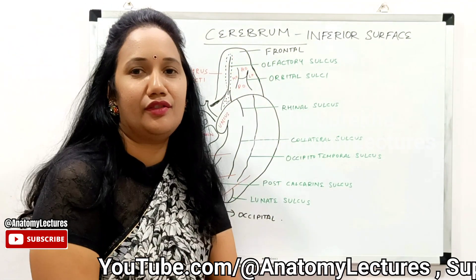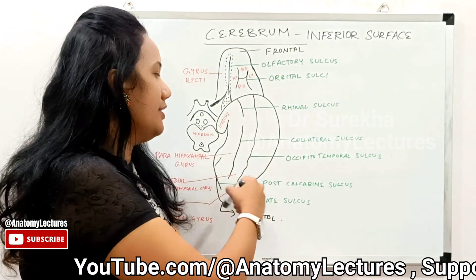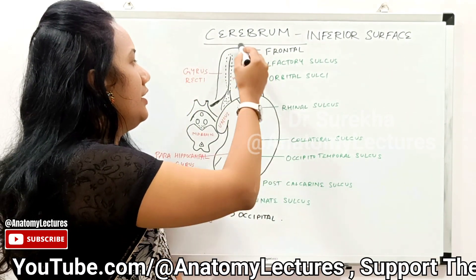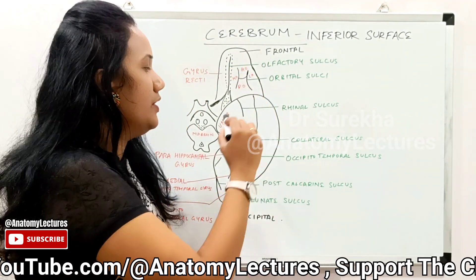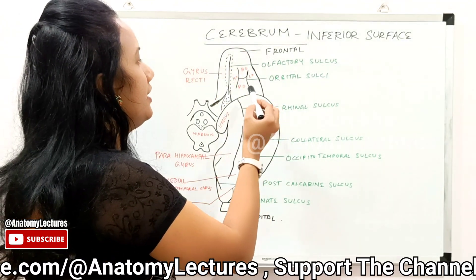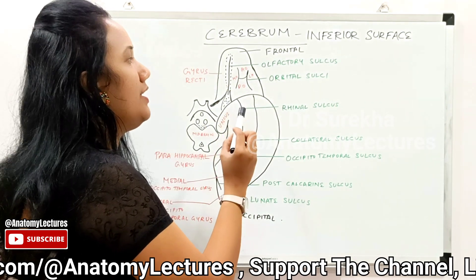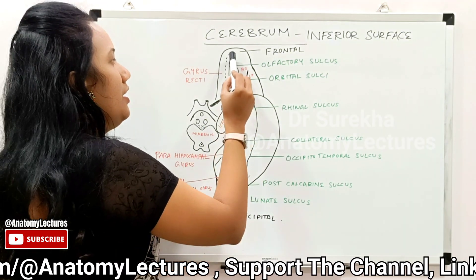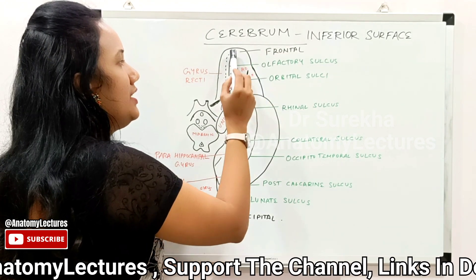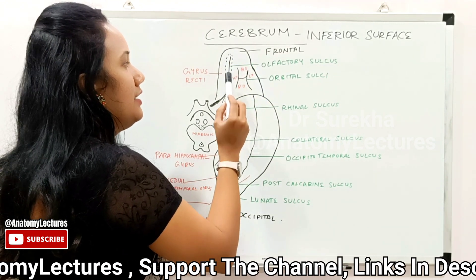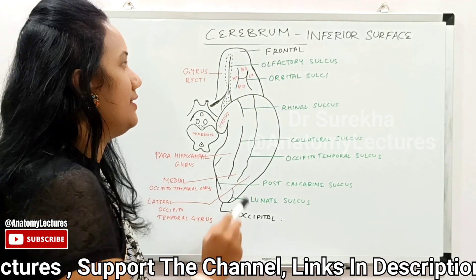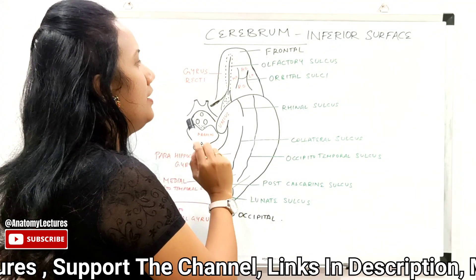The orbital surface is in relation to the orbit, and the tentorial surface is in relation to the tentorium. On the orbital surface, the major sulci present are: medially, one olfactory sulcus, and lateral to that olfactory sulcus, one H-shaped orbital sulcus in the orbital part.